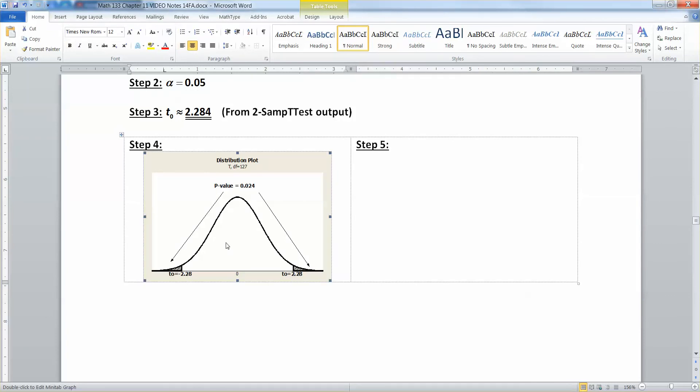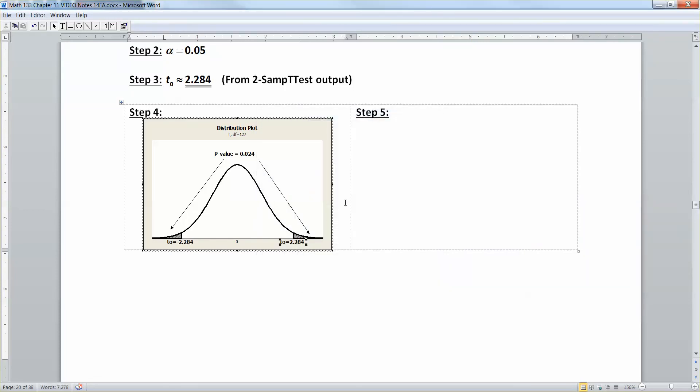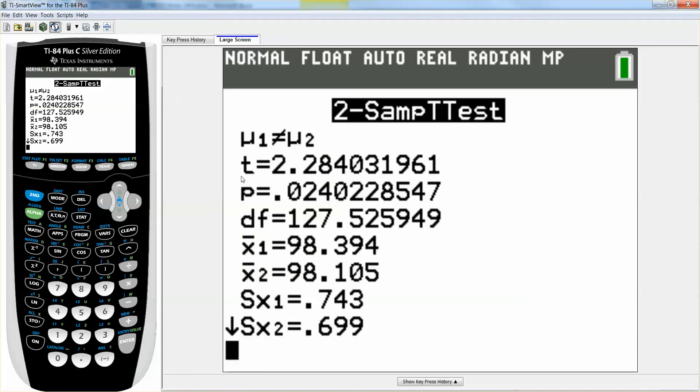There we have it. So we have negative 2.284 over here on the left. That's that vertical bar where the gray period starts. Then we have positive 2.284 over on the right, and that's this right-hand black bar right before that gray period starts. And then the p-value is actually both areas put together. Now where do I get the p-value from? The p-value is from the 2-samp-t test output. It's right here. See p, little lowercase p, that's your p-value. It's 0.024 and some change.